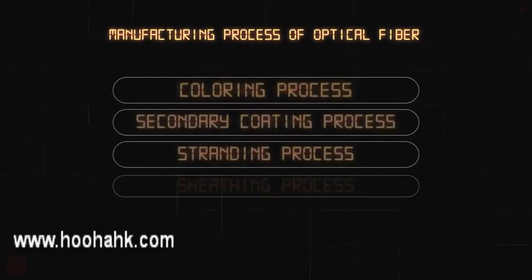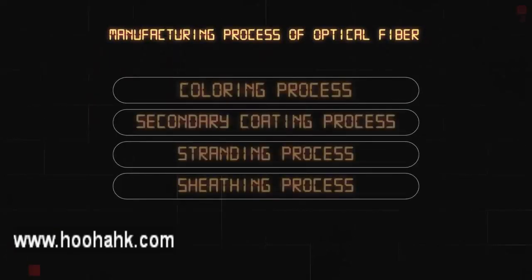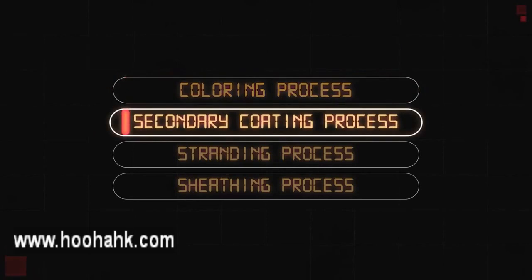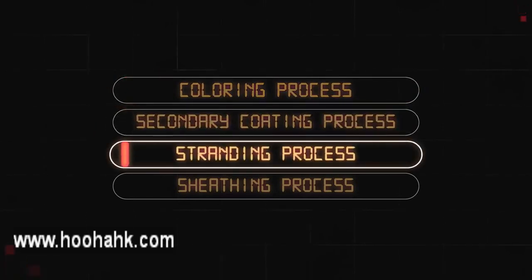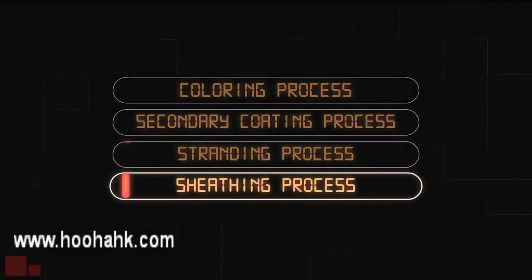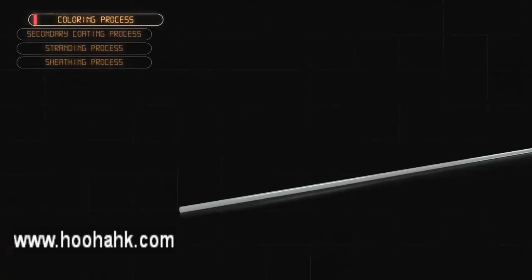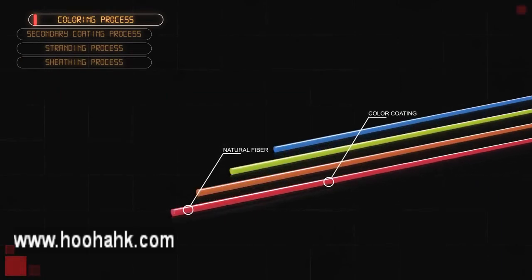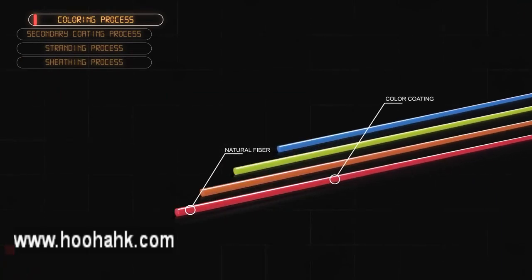The manufacturing process is divided into four stages: coloring process, secondary coating, stranding process, and sheathing process. The coloring process is used to color natural optical fibers. Color identification of the fiber is required to splice fibers with the same colors in the field.